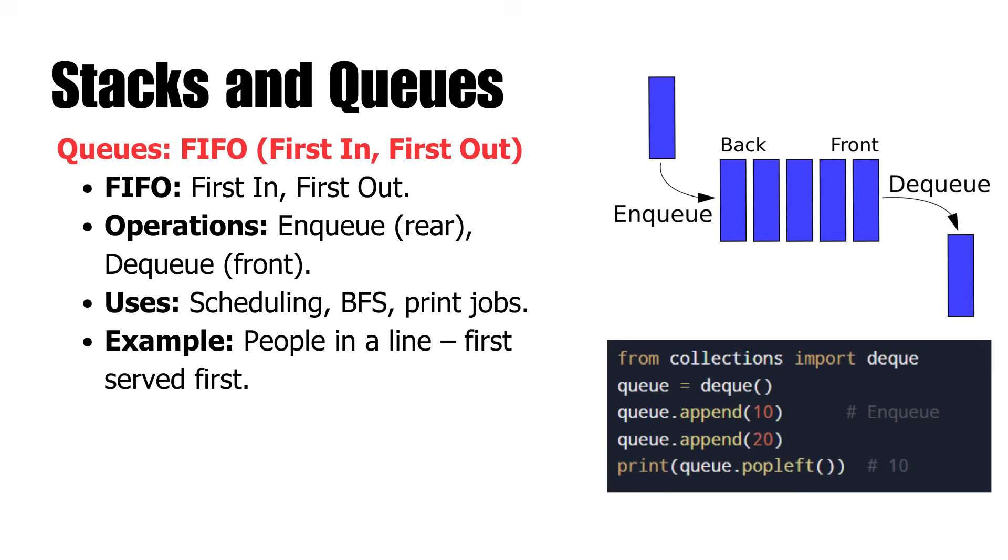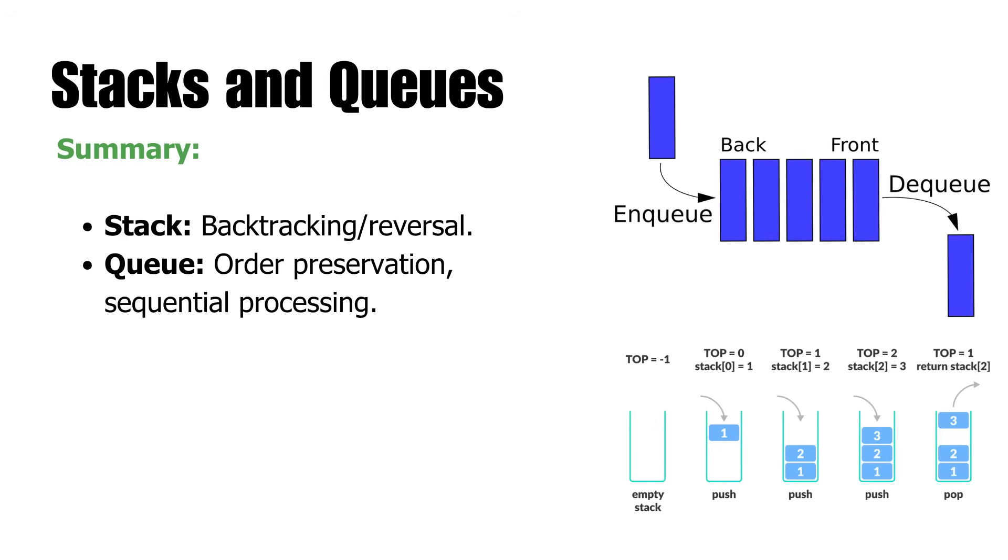Queues can be used for job scheduling, breadth-first search jobs, and printer queues for print jobs. The DQ data structure in Python from the collections module offers good queue operations. Items can be appended to the back and popped to the front in O(1). In simple terms, stacks are ideal if you need to backtrack or reverse, while queues are ideal for order preservation and sequential processing. We'll now turn our attention to trees and their different types.